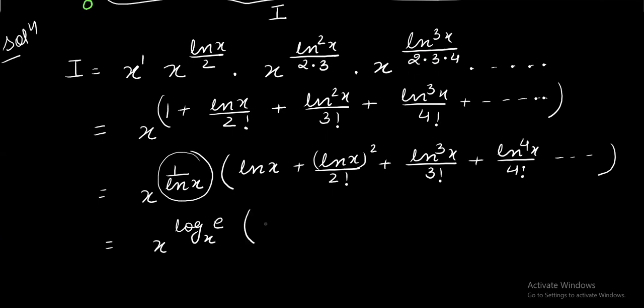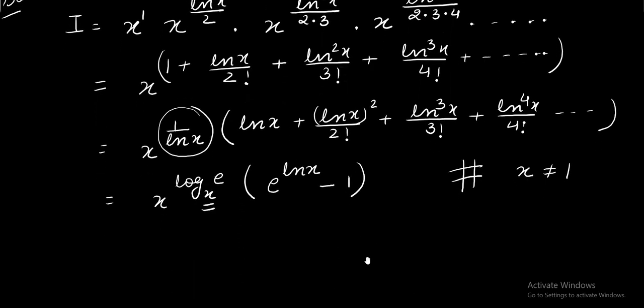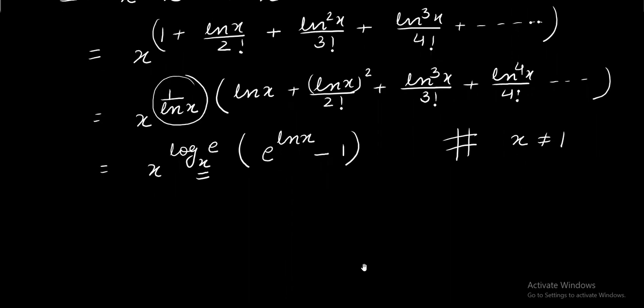Again within the parenthesis you can see that it is nothing but the expansion of e power ln x but the very first term 1 is missing. So I have written it like this. One important thing over here is keep in mind that x cannot be 1. x cannot be 1 over here so while putting this value or replacing i with this expression I have to make sure that x is not taking the value 1.